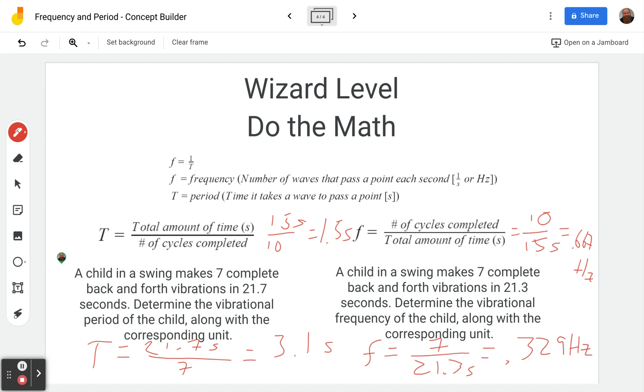The only choice you have other than seconds and Hertz is meters per second, which is just because some people think of frequency as speed. And so that's an option there, but don't bite. It's not true. So no meters per second. It's either seconds for the period or Hertz for the frequency.